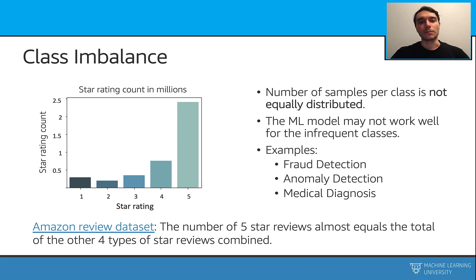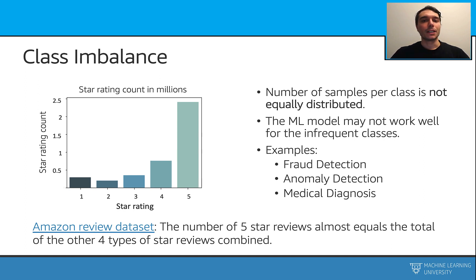Let's have an example. We are going to use this public Amazon review dataset. In this dataset, when we look at the star ratings field, we see many data points with 4 and 5, but not so many with the others.